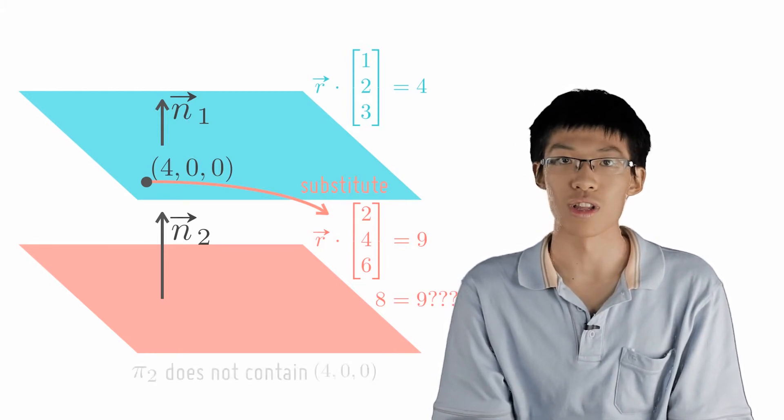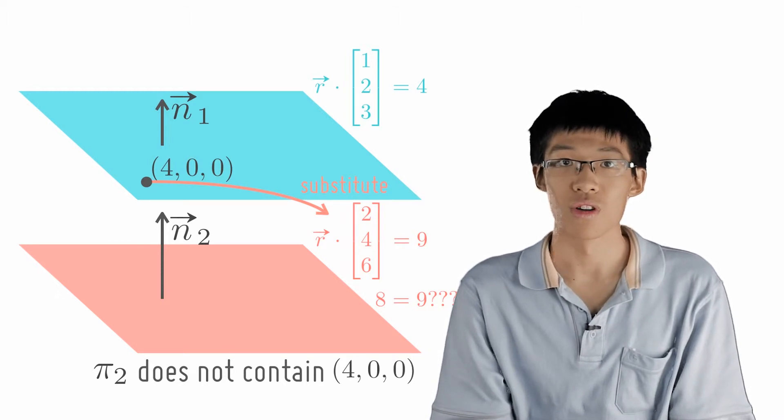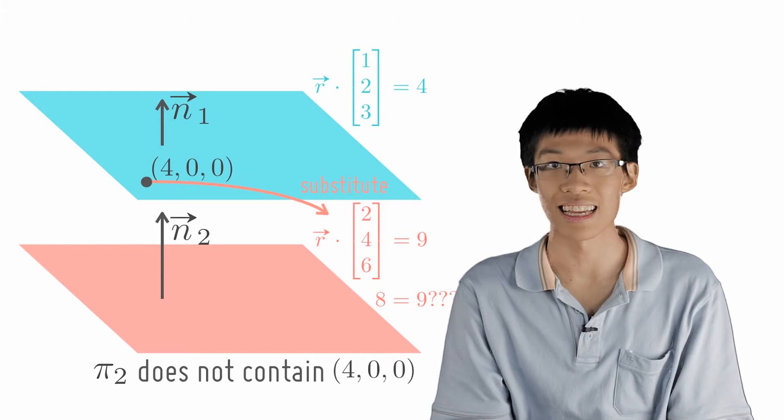So, 4, 0, 0 is not on π2. Combine this with the fact that they are parallel, we have shown that π1 and π2 do not intersect at all.